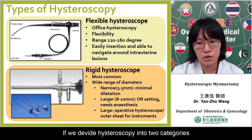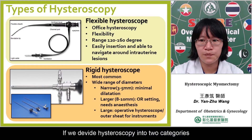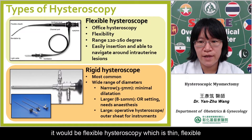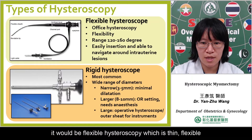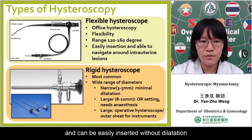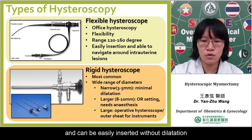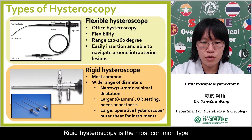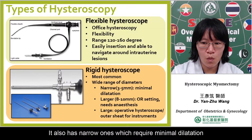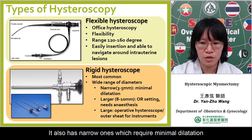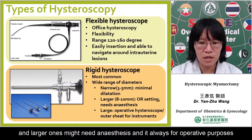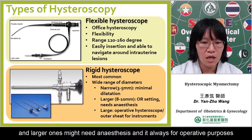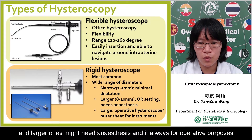If we divide hysteroscopy into two categories: flexible hysteroscopy, which is thin and flexible and can be easily inserted without dilatation — therefore it is often used as office hysteroscopy. Rigid hysteroscopy is the most common type; it also has narrow lens which require minimal dilatation, while large lens might require anesthesia and is always for operative purposes.